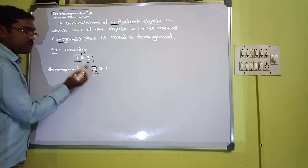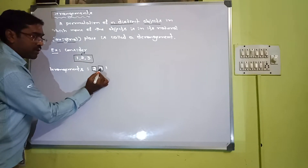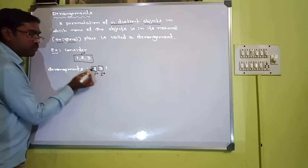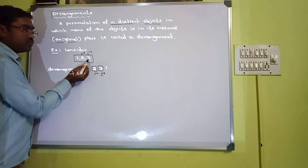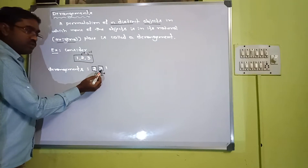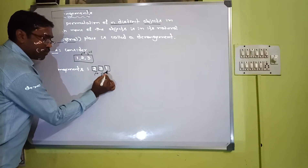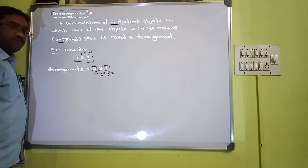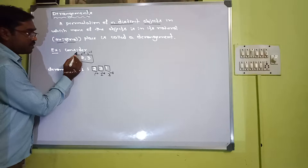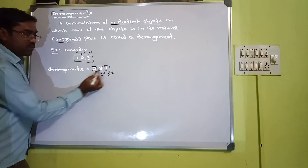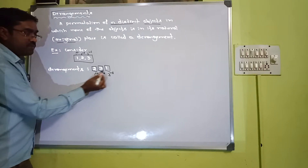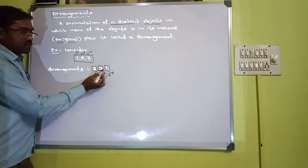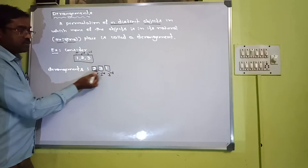So 2 is not in its original place. Here 3 was originally in the third place, but we have taken 3 in the second place, so 3 is not in its original place. And 1 has come in the third place. So this is a derangement because none of the objects are in their original place.